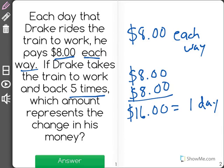Now it says if Drake takes the train to work and back five times, so that's equal to five days, which amount represents the change in his money?